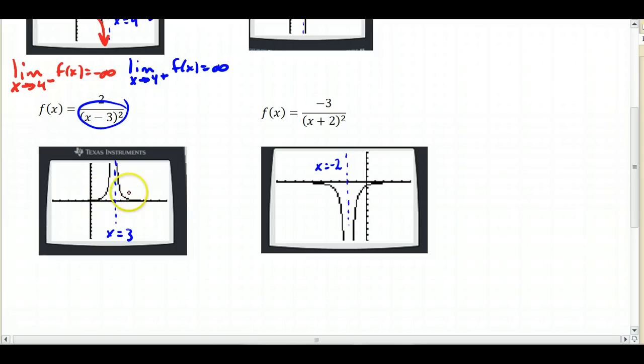Let's look at this one. It seems to be the case that as x approaches 3 from the left of f of x, we're going to positive infinity, and the limit as x approaches 3 from the right of f of x also equals positive infinity, because we're going up in both cases from the left and the right.